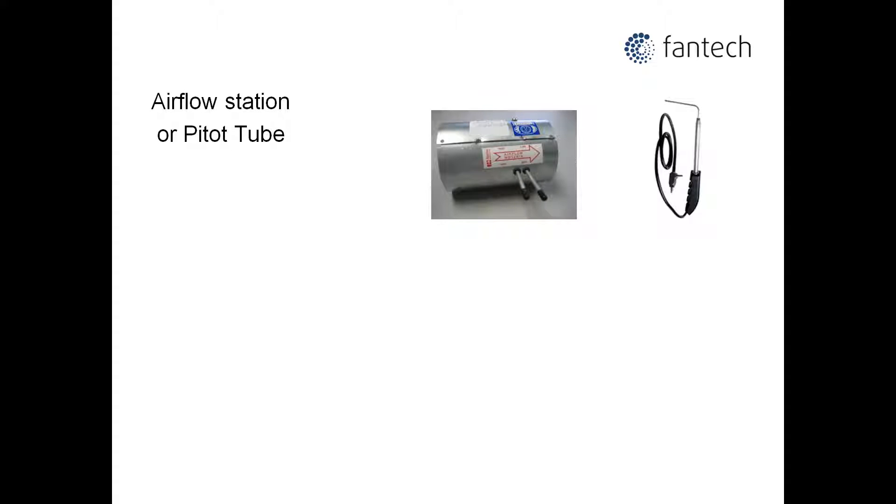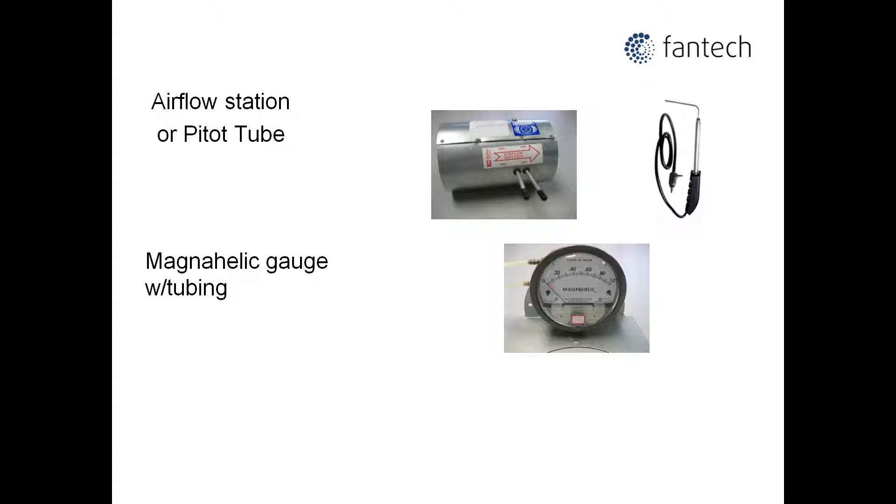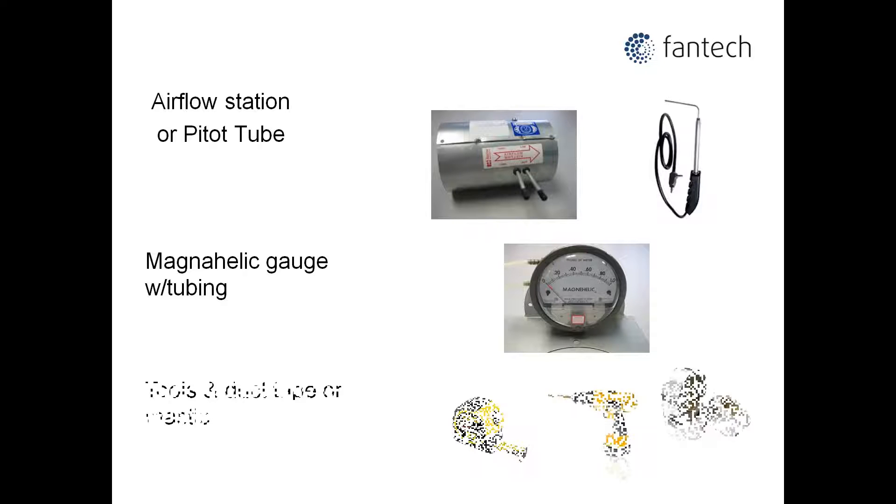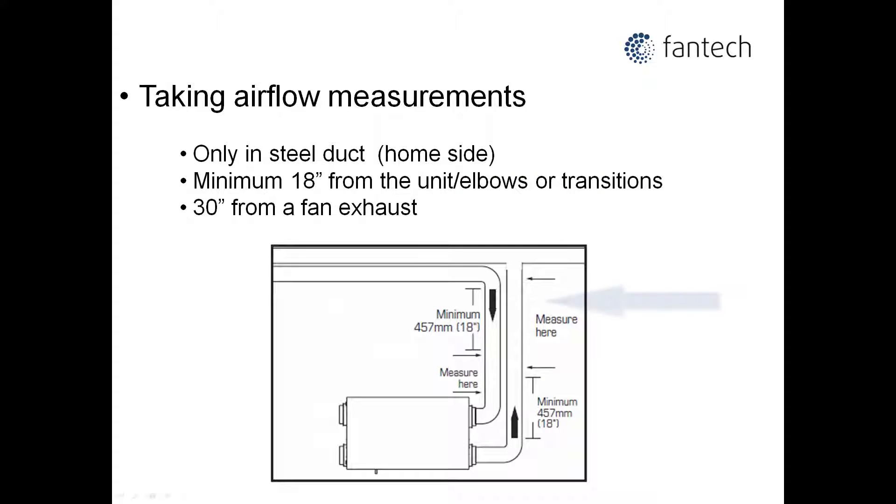Two common methods of balancing air flows and pressures are airflow station and pitot tube. Both these items require the use of a magna helic gauge, and of course a selection of hand tools, tape and masking.